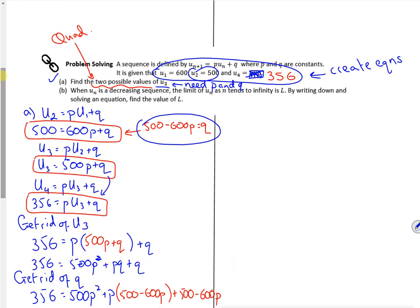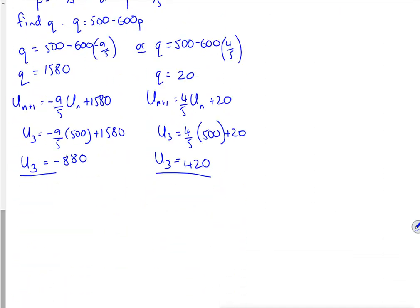And then it says when un is decreasing, find L. Now I'm really out of time so I've got to be careful with this one. So if you think about the sequence, the sequence was 600, 500, something, and then it was 356 wasn't it? 356. So for it to be decreasing, the only way you can be decreasing is if it's a 420 in there.